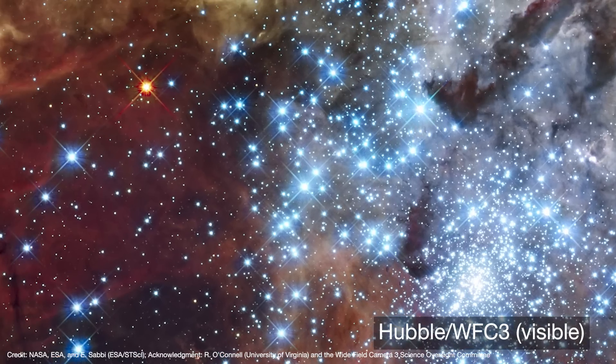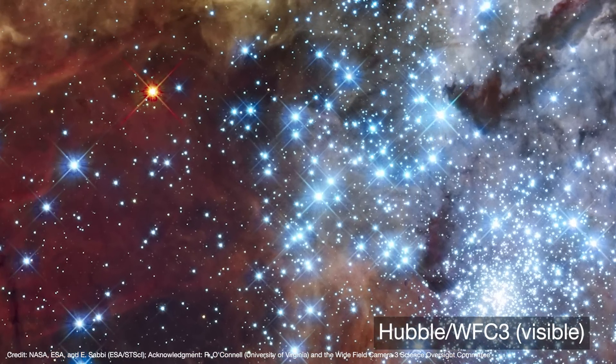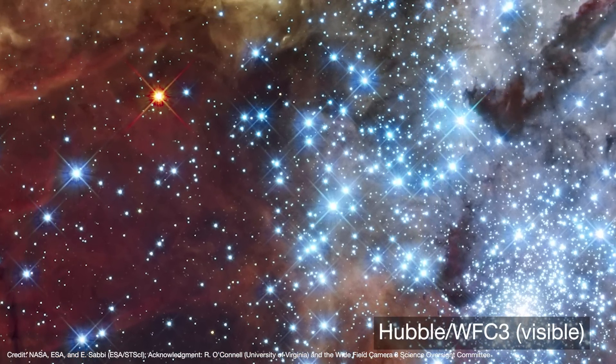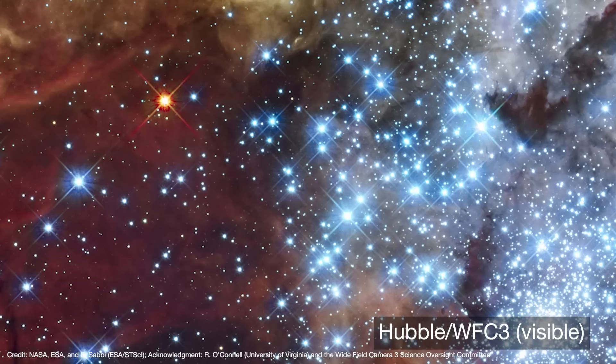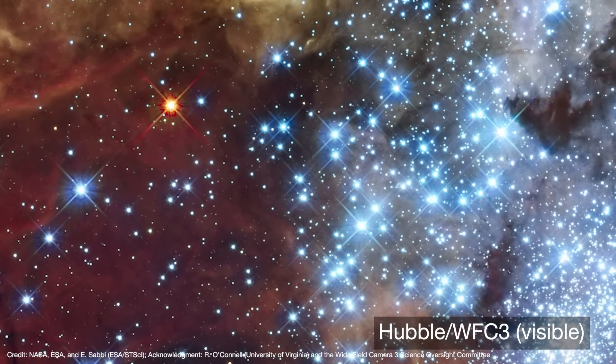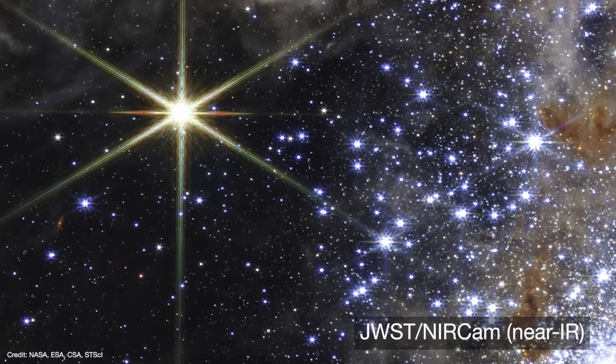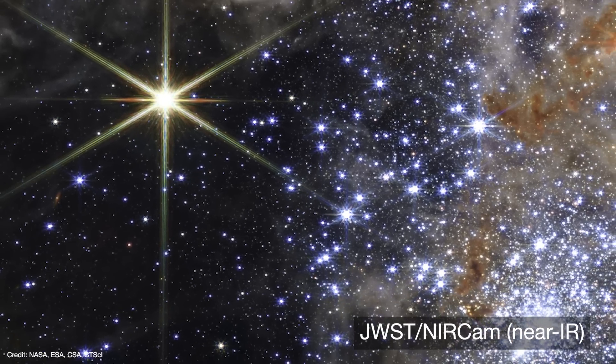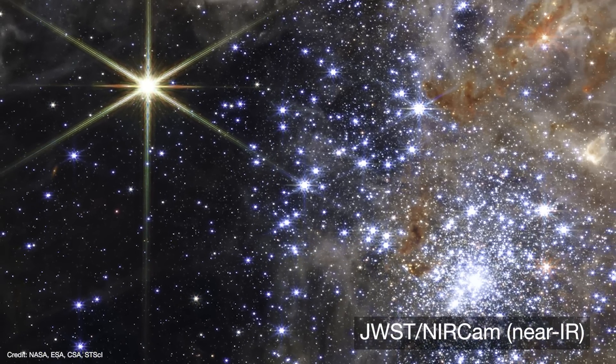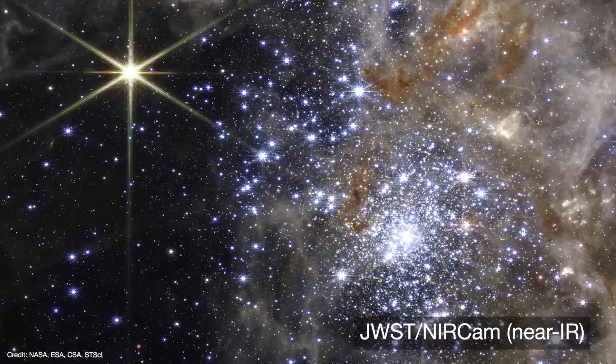But there is one notable exception to the hot blue stars that dominate the tarantula. At the top of the main cavity is an evolved red giant star that's near the end of its life. In Webb's near-cam image, the star becomes the brightest object in the picture. And that's because its surface temperature is much lower than the surrounding stars. So the red giant is actually the brightest in the near-infrared, and it outshines everything else in the image.